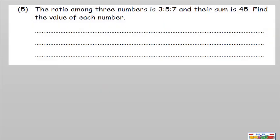Question number five: the ratio among three numbers is 3 to 5 to 7 — between three numbers A to B to C: first, second, third. We are given their sum. Make plus between all numbers: 3 plus 5 equals 8, plus 7 equals 15. Under it is 45.